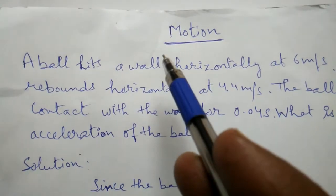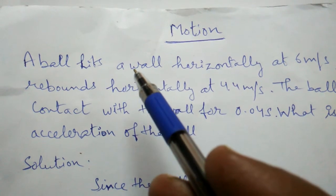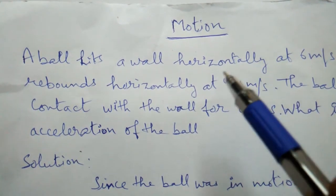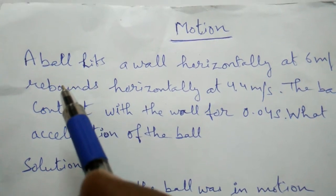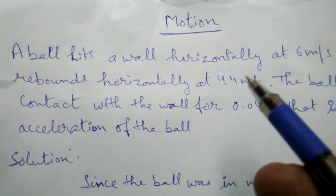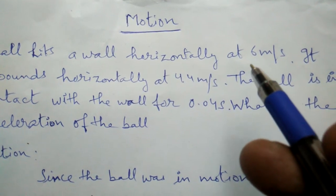Today we will take a numerical problem from the chapter motion. The statement of the numerical is: A ball hits a wall horizontally at 6 meters per second.